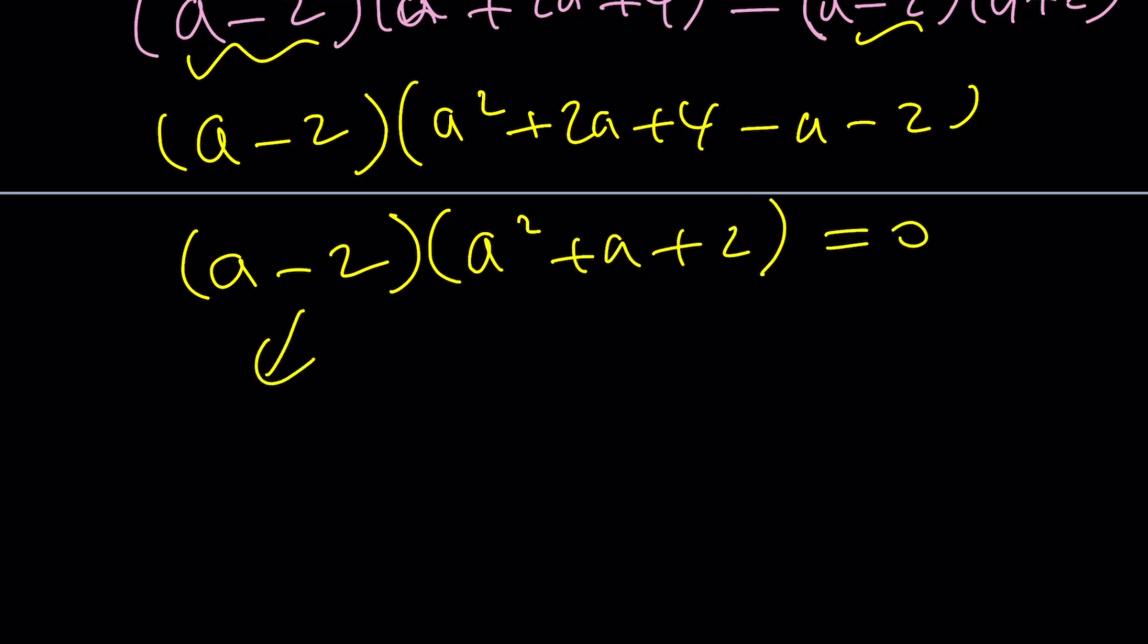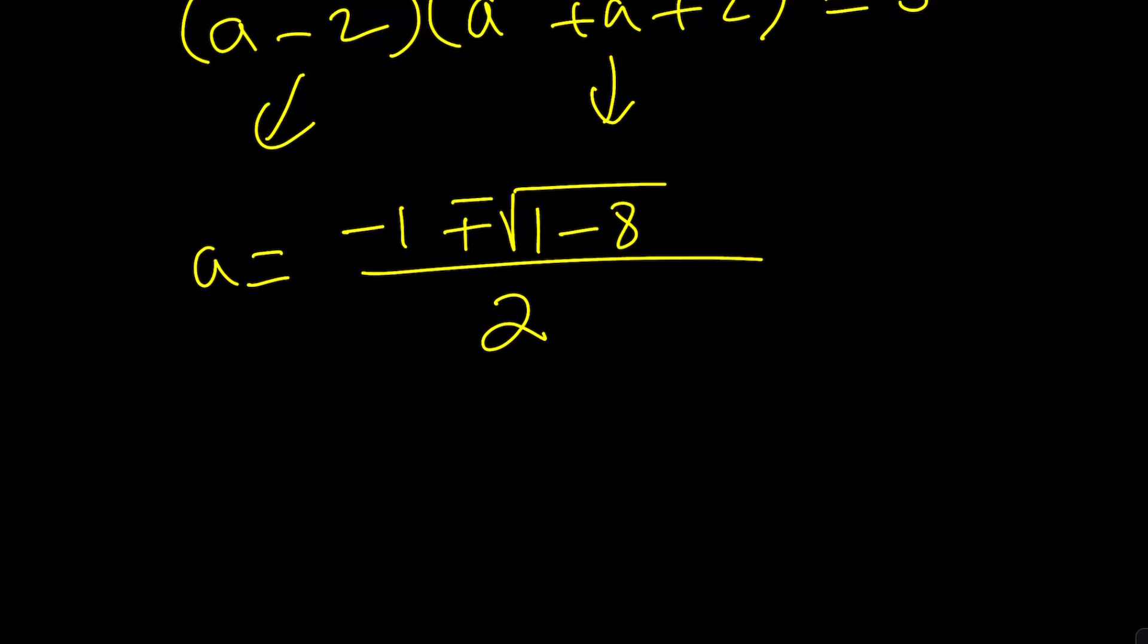The other one from the quadratic formula is going to have negative b plus minus the square root of b squared minus 4ac. That's going to be an 8. So, we're going to get non-real solutions. Make sense? So, from here, a can be written as negative 1 plus minus the square root of 7i divided by 2.